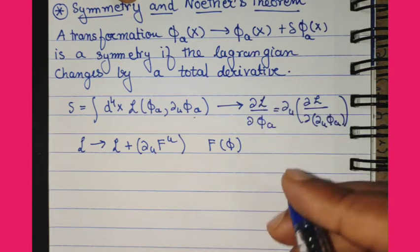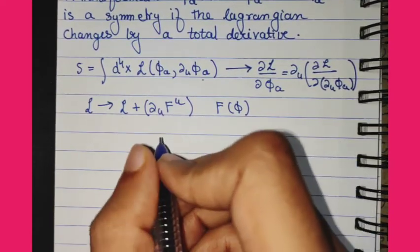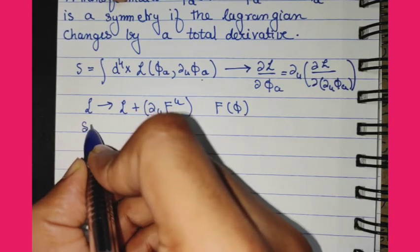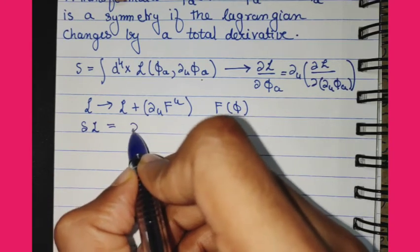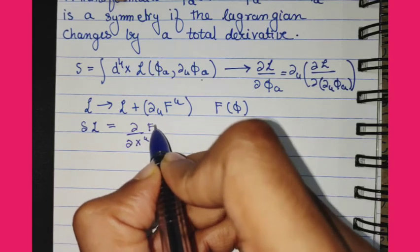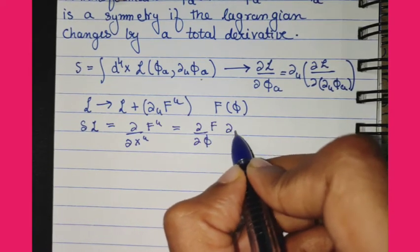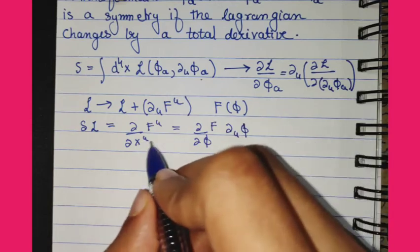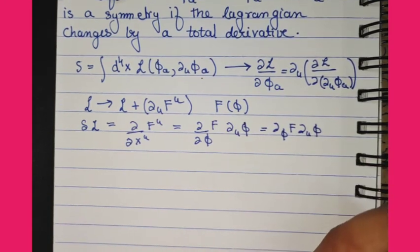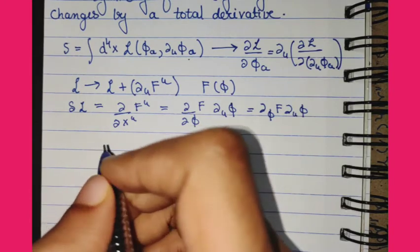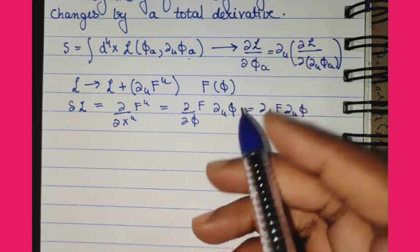These are called symmetries because the equation of motion of fields remains unchanged. So if we have a change by a total derivative, we can write delta L equal to del_mu F^mu, which by the chain rule can be written as del_phi F times del_mu phi. Once we have this written, we can see why the equation of motion is actually unchanged.